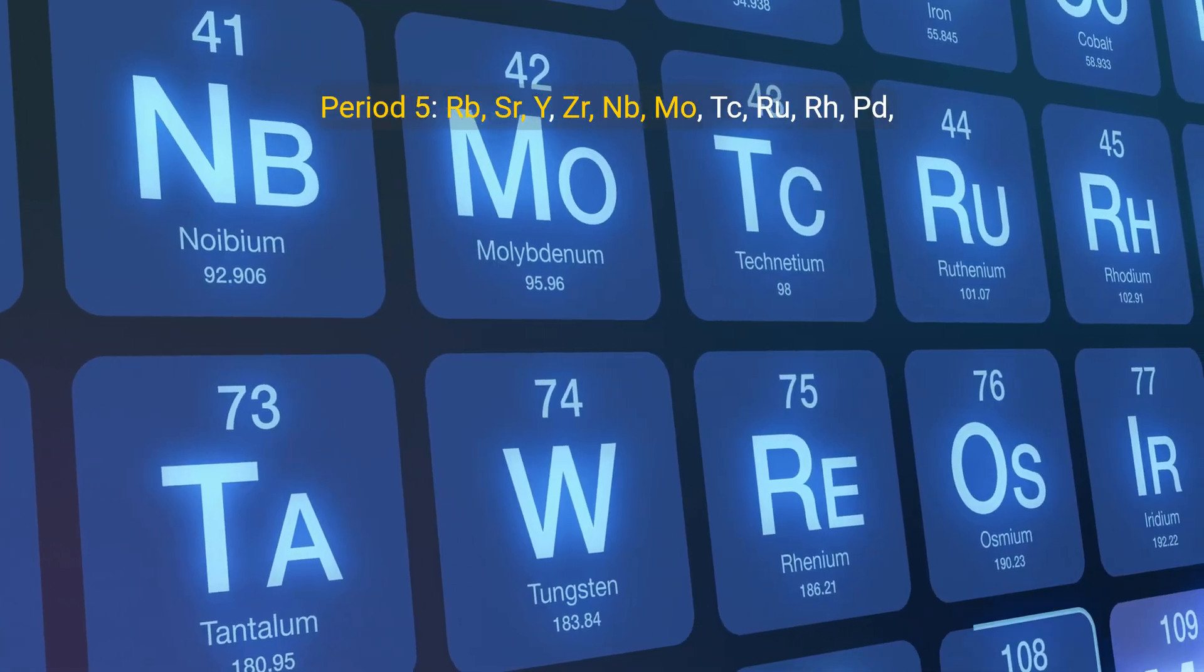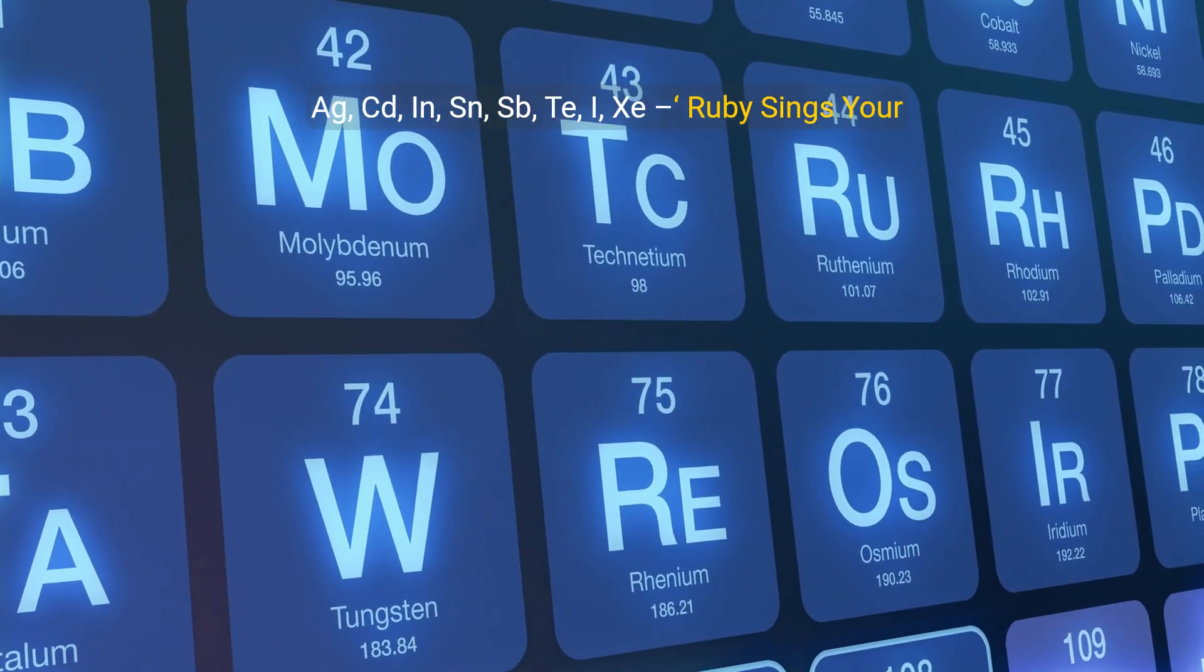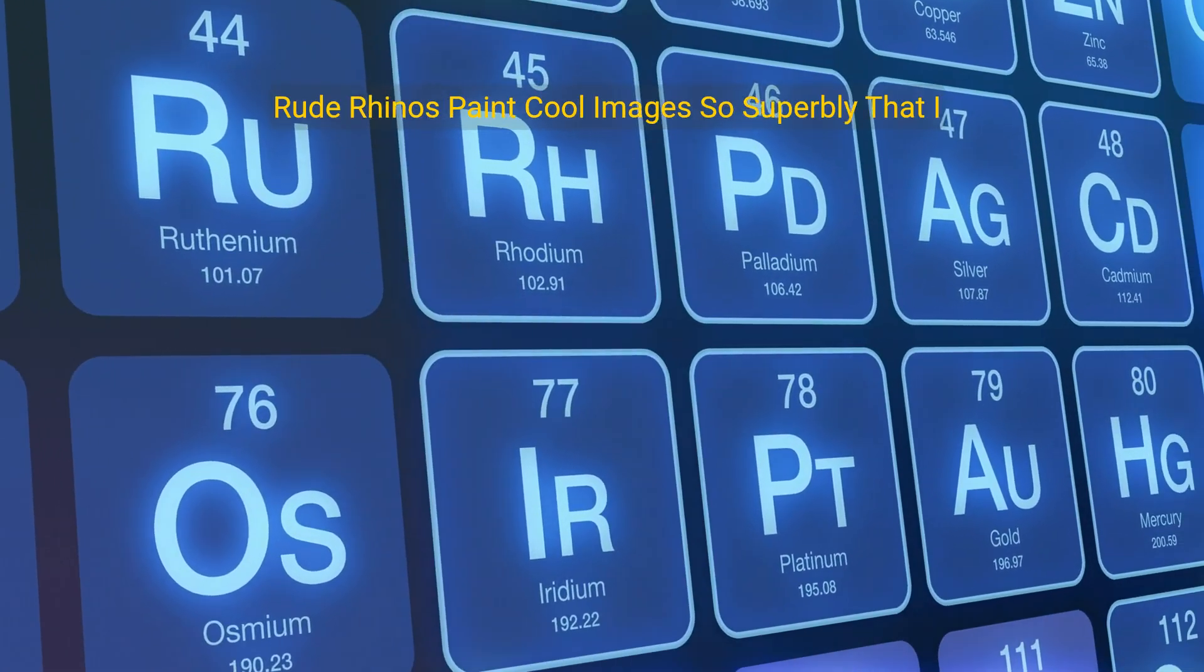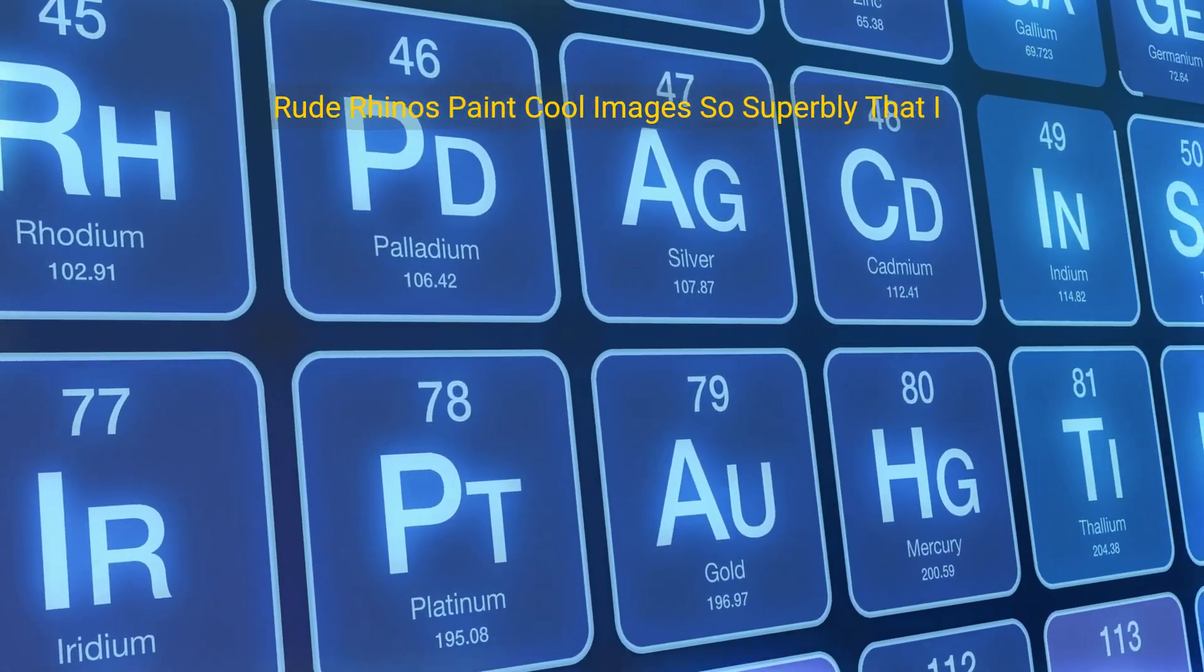Period 5: Rb, Sr, Y, Zr, Nb, Mo, Tc, Ru, Rh, Pd, Ag, Cd, In, Sn, Sb, Te, I, Xe. Ruby sings your zany notes most Tuesdays. Rude rhinos paint cool images so superbly that I exit.